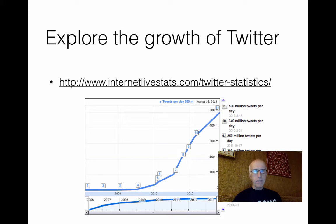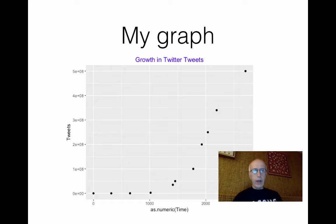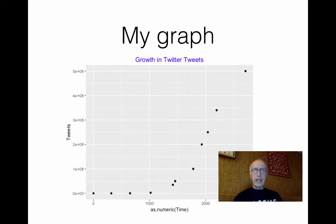I threw the data into R and got a graph looking like this. On the vertical axis is the number of tweets per day, and I changed the time variable to number of days past the first tweet. Clearly this is not a linear growth — this is some sort of exponential growth or something.